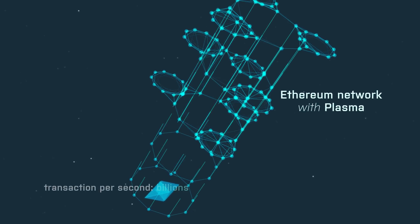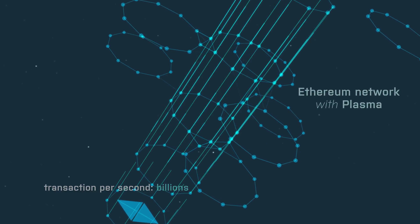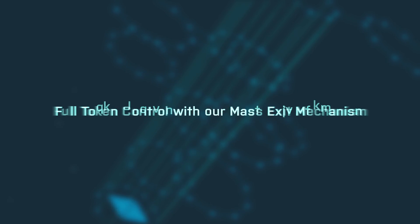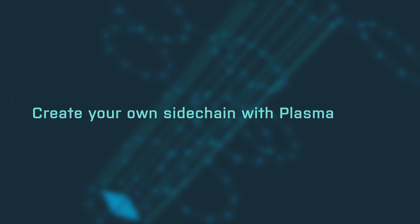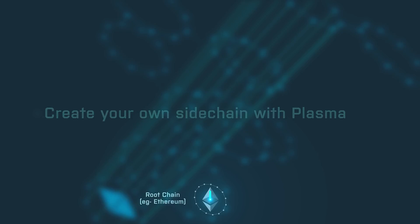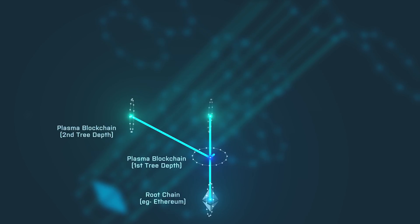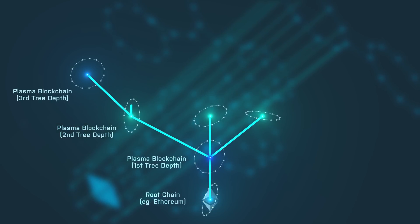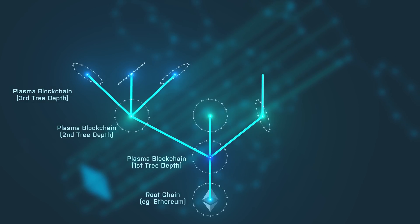Plasma helps scale out transactional output so we can really start competing with other centralized exchanges. We are also able to still offer trustless and secure trading where you are fully in control of your tokens at all times. What's really special about Plasma is it enables us to create our own sidechain — essentially our own blockchain that communicates back down to the root Ethereum chain to ensure that all trades on our decentralized exchange are trustless, secure, but still extremely fast.